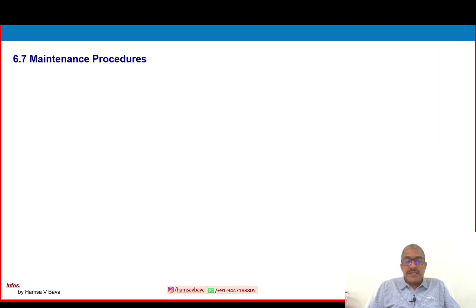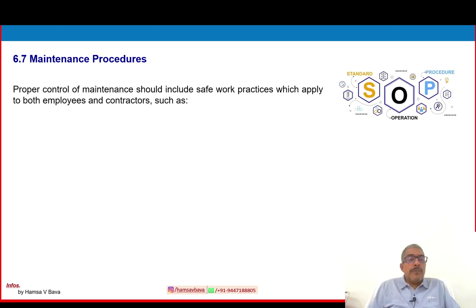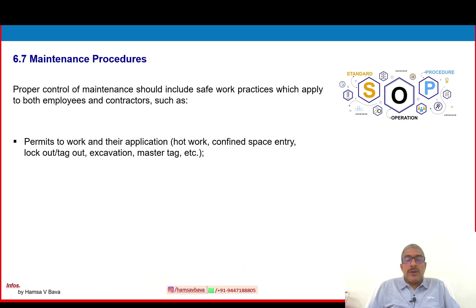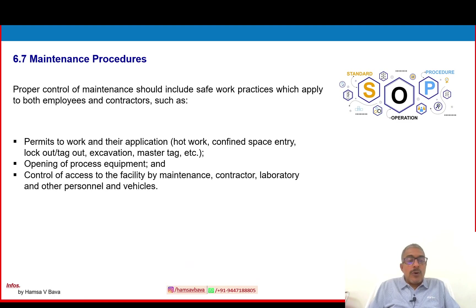6.7 — maintenance procedure: proper control of maintenance should include safe work practices which apply to both employees and contractors, such as permit to work and their application — including confined space entry, lockout/tagout, excavation, and master tag. This also covers opening of process equipment, and control of access to the facility by maintenance, contractor, laboratory and other personnel and vehicles.